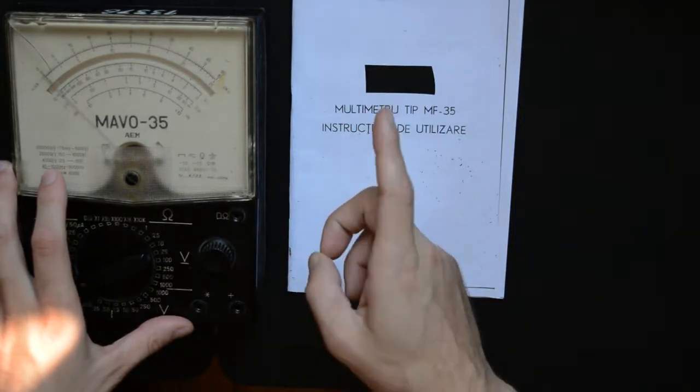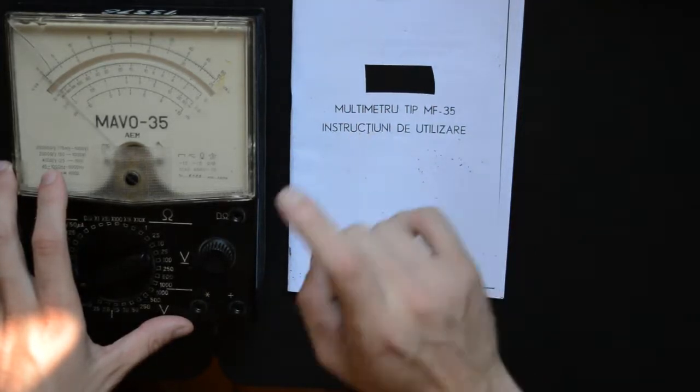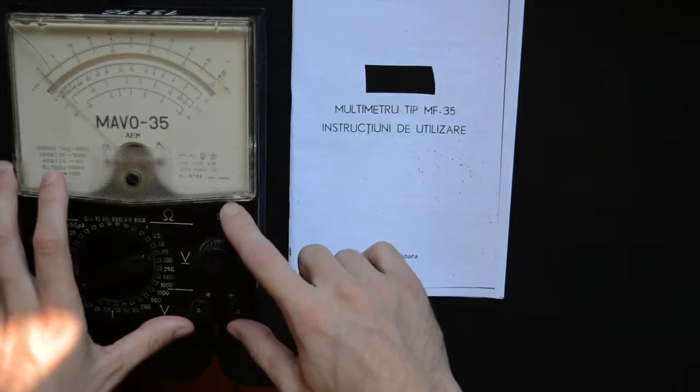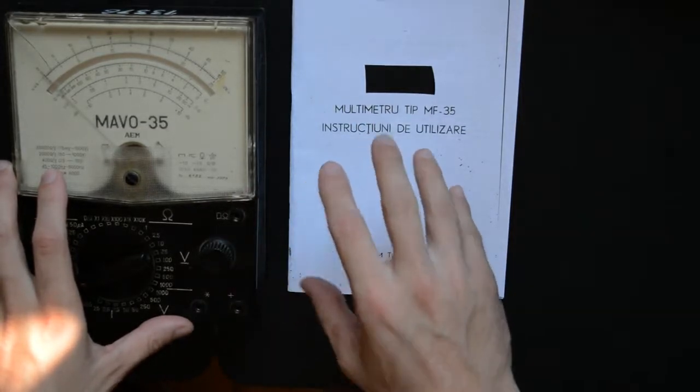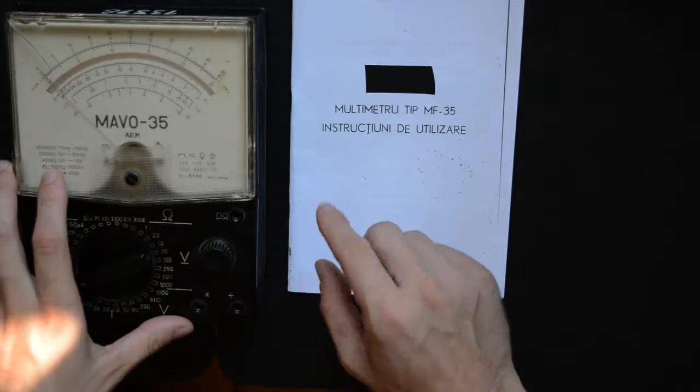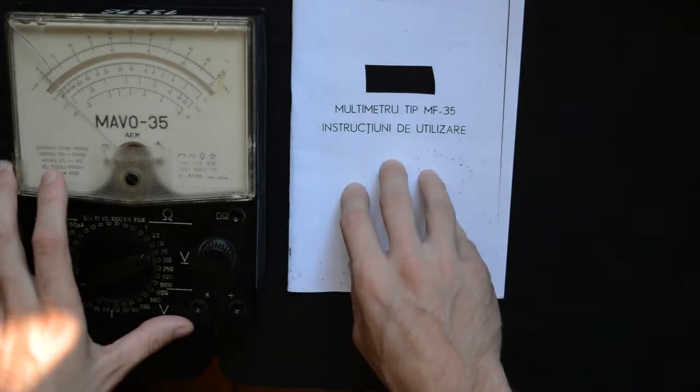You might think I'm joking with the weight, but it says right here in the manual that this thing weighs about 2 kilograms. Now for a multimeter that was designed to be portable and used as a field measurement instrument, that's a lot.